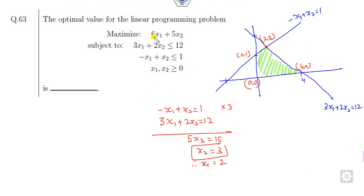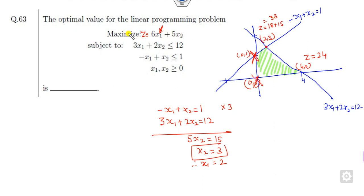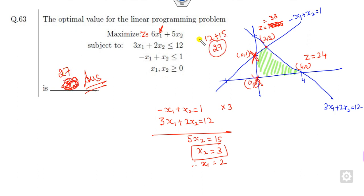Now you can find the value of z at all corner points. z is maximum when x₁ is maximum. At the point (2,3): the value is 6×2 plus 5×3, which is 12 plus 15 = 27. So the maximum value and the right answer of this problem is 27.